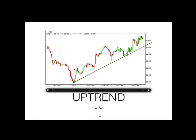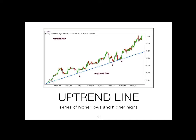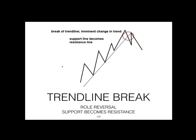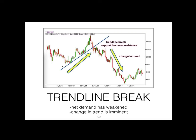Take a look at LTG — the trend is upward, making higher highs and higher lows from October 2015. The chart of JG Summit shows an uptrend line as well — there are at least four points at the bottom that we can connect to form a trend line. When net demand weakens there is a role reversal — the uptrend line now becomes resistance and there is an imminent change in trend. Here we see the trend line break of Bloom — the previous support line or uptrend line now becomes resistance.